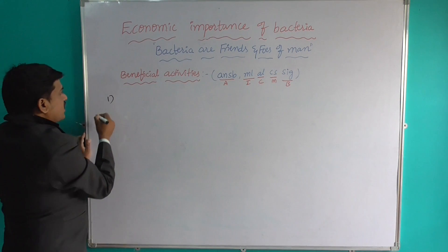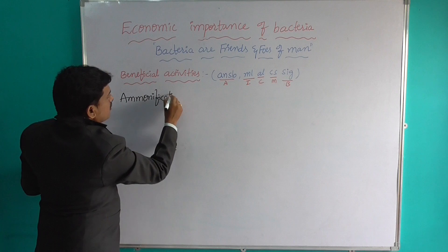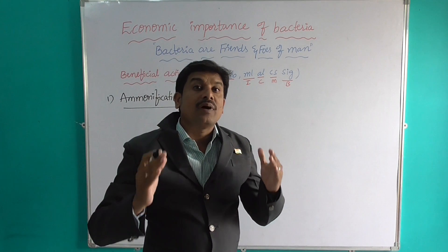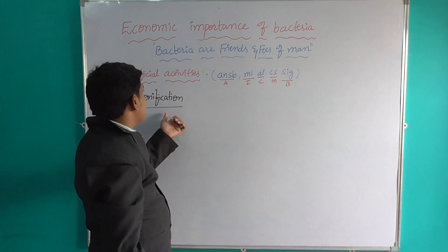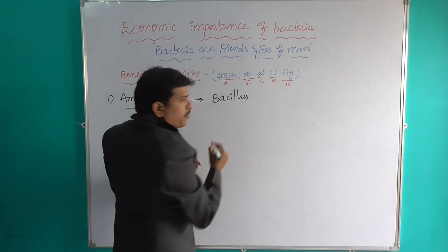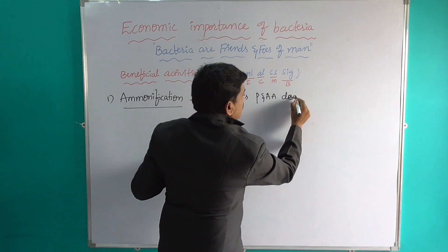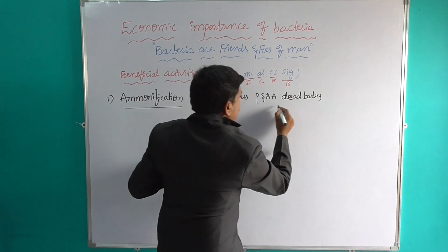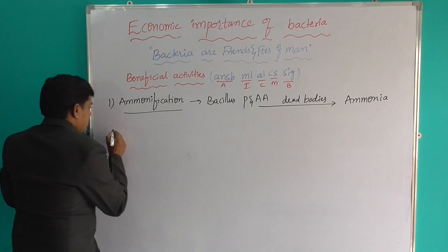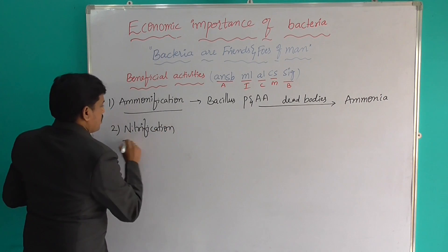The first beneficial activity is ammonification. What is meant by ammonification? The proteins and amino acids of dead plants and dead bodies which are converted into ammonia is called ammonification. The best example is Bacillus. Here, the proteins and amino acids of dead bodies are converted into ammonia, so it is called ammonification.